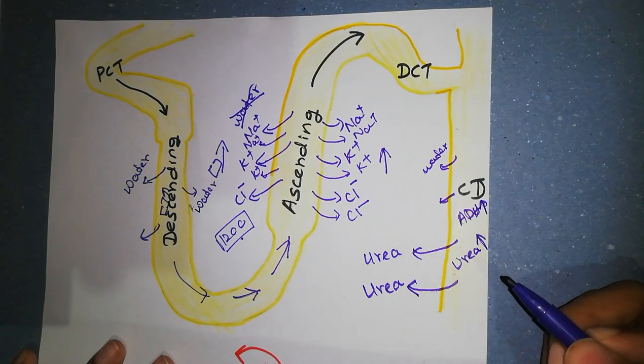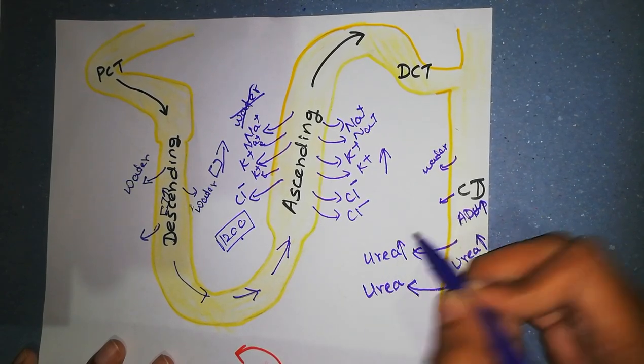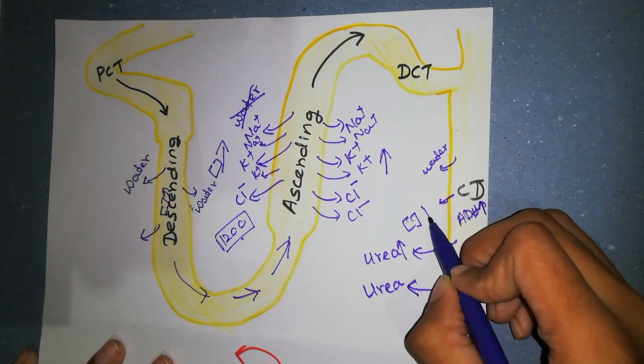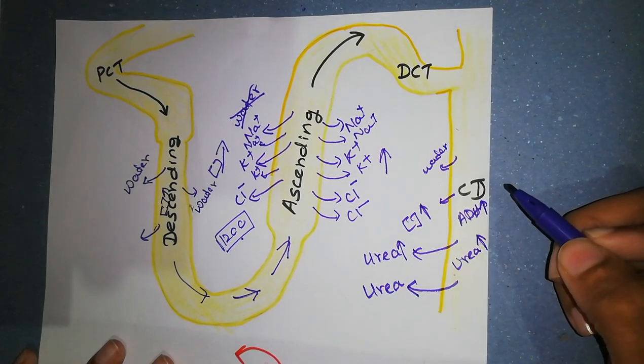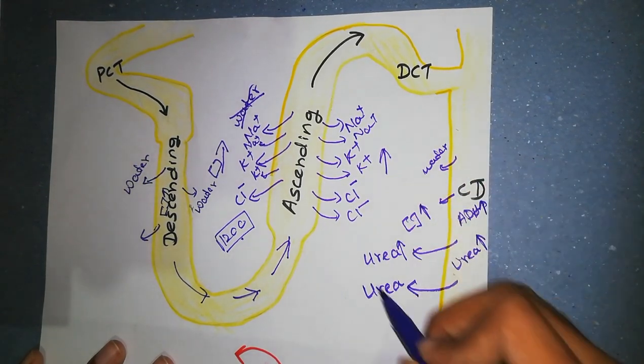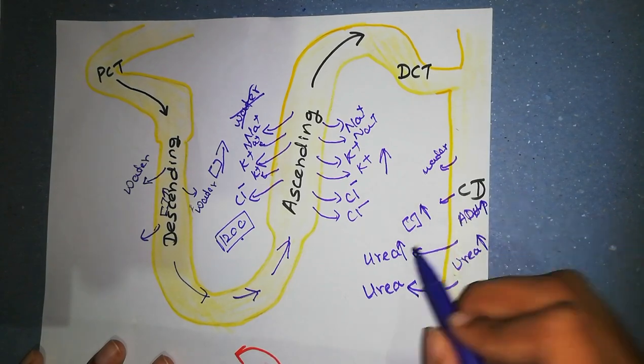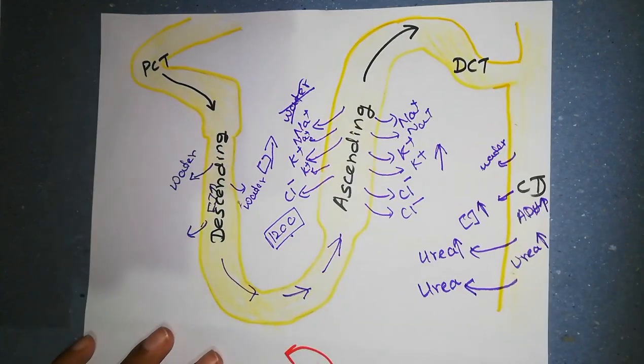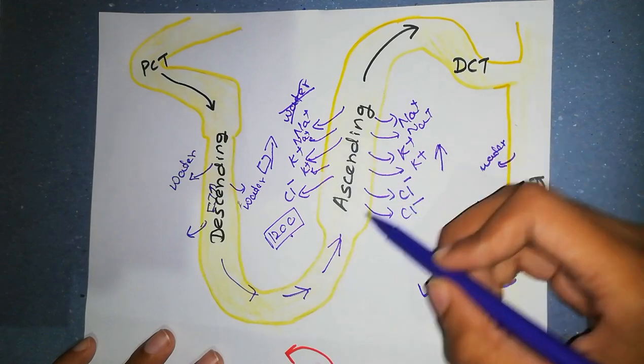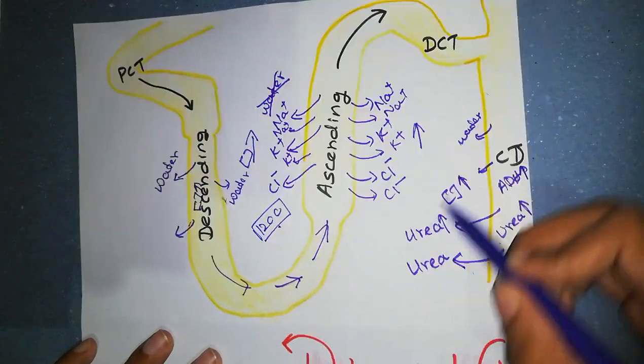When more urea is deposited, the concentrating capacity of kidney increases. Therefore, we can tell high protein diet increases the ability of kidney to concentrate urine. So these are the major factors that contribute to build up hyperosmolarity in medullary.